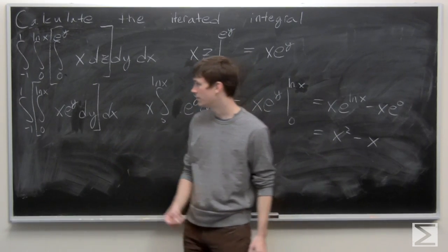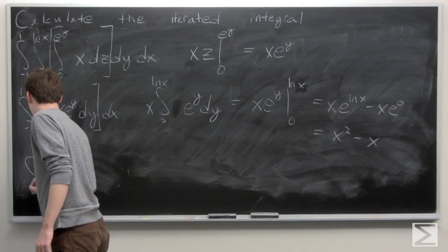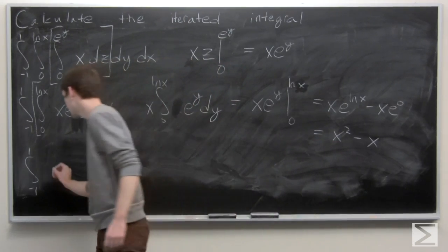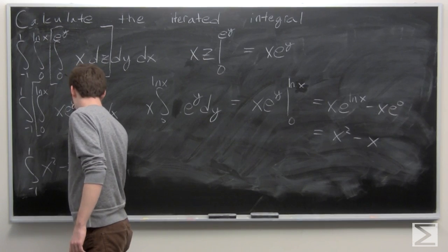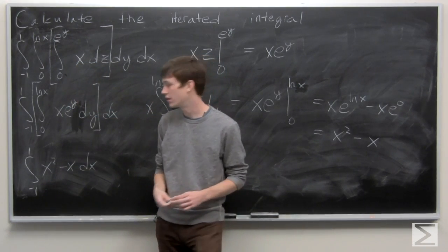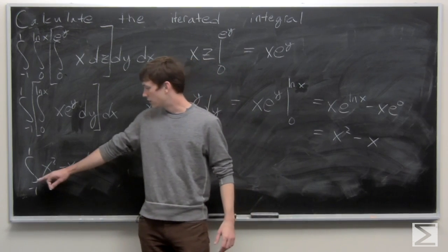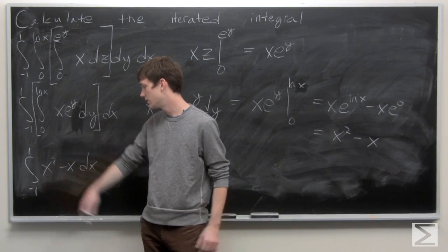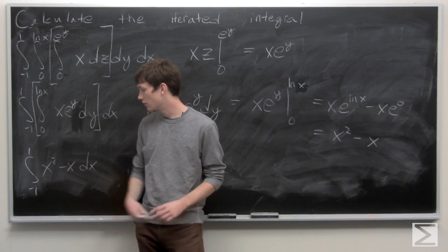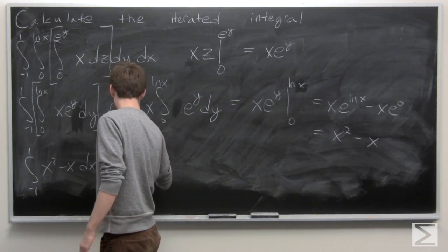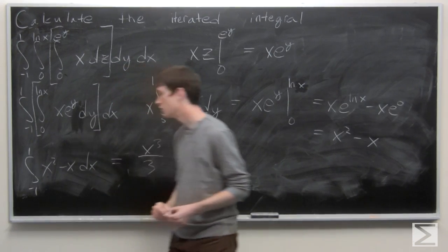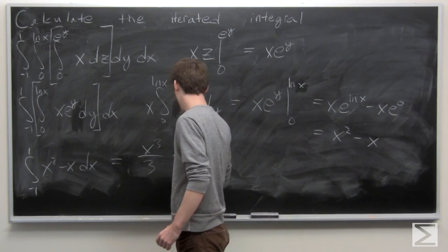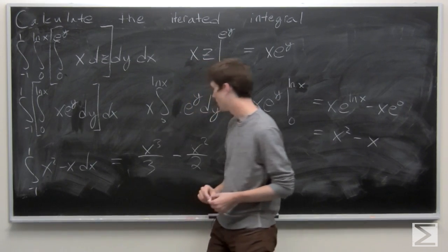So we have one more integral to compute, which is the integral from negative 1 to 1 of x squared minus x dx. The integral of a difference is the difference of integrals. The integral of x squared is x cubed over 3, and the integral of minus x is minus x squared over 2.